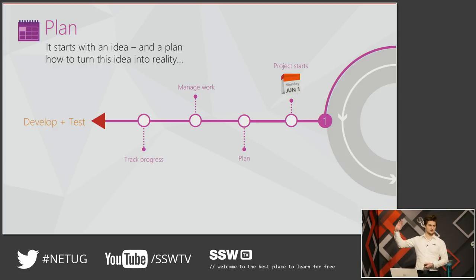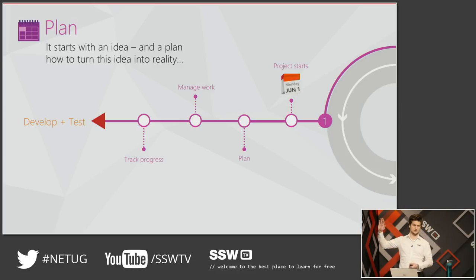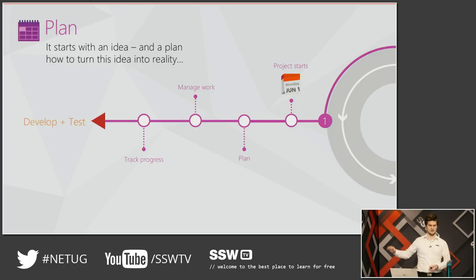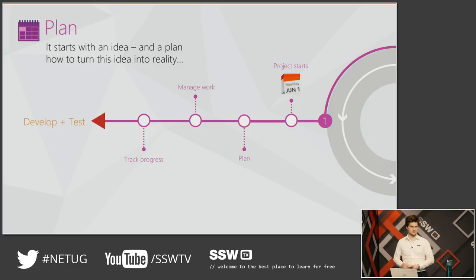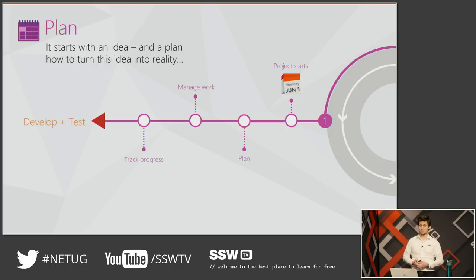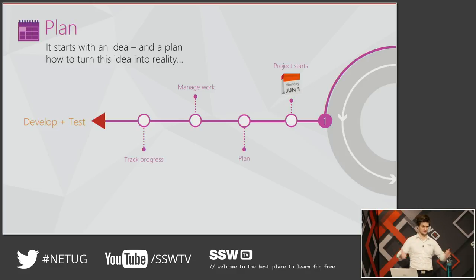How many of you are using any tools like that? Okay, most of the room. Who's using JIRA? Half the room. Who's using VSTS? About this many. Who's using Raleigh? No one. So VSTS and JIRA are the most used tools here. You plan sprints and sprint reviews — great stuff.